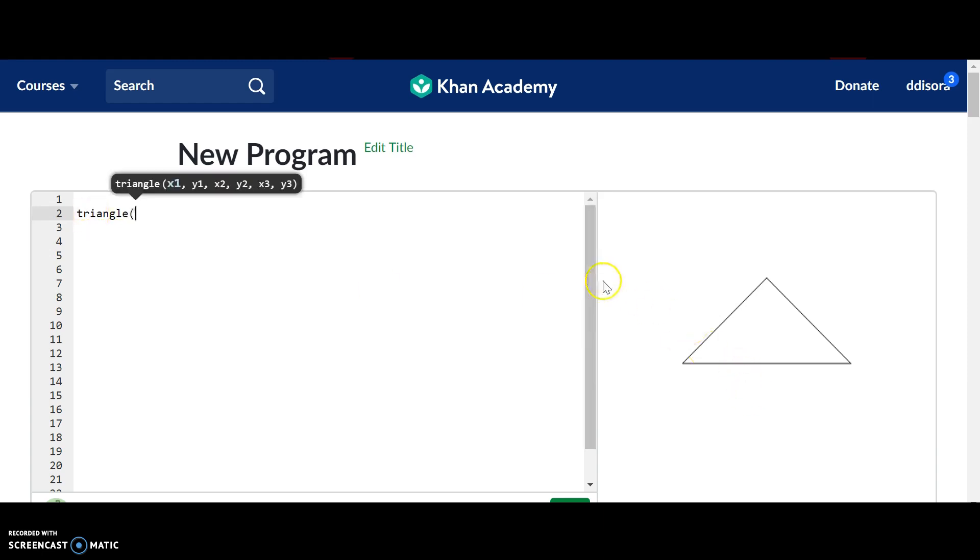So first, again, we're going to identify this X1. I'm going to call this 200 pixels in. And then how far down? It's towards the top, so I'm going to label this Y1, about 100 pixels. So 100 pixels. There we go.